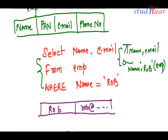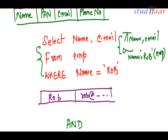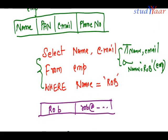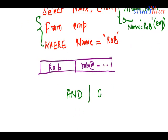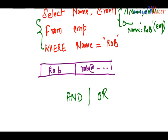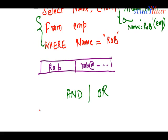A simple WHERE clause can have AND and OR operators, as well as comparison operators like equal to, greater than or equal to, less than or equal to, and not equal to (written as != or <>).